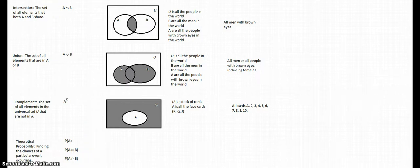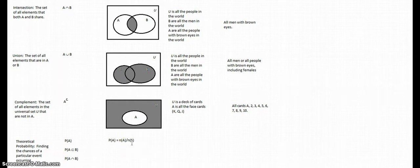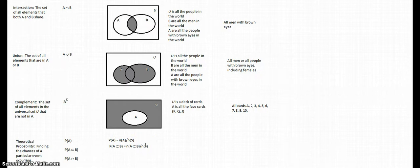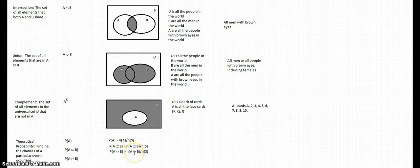We're going to use an equation for this. To find the probability, you're going to take the number of elements in your A set divided by the number of elements altogether in your universal set. You take the number of elements in your subset divided by the number in your universal set, or in your two sets put together. For the last one — the probability of the intersection of A and B — it's going to be the number of elements you get when you intersect A and B, divided by the number in your set all together.